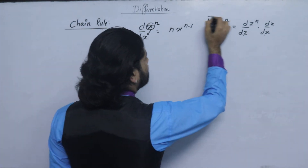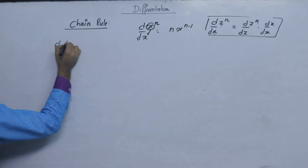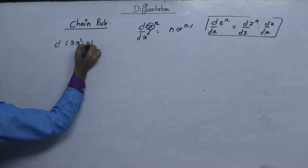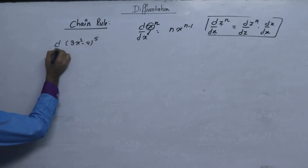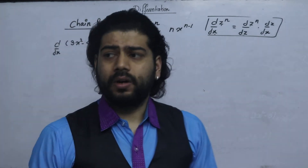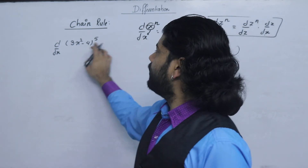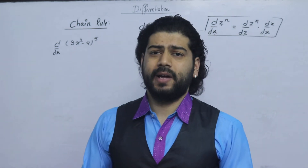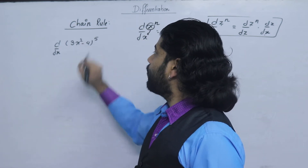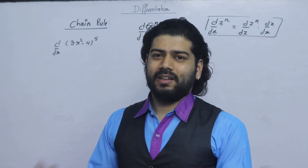Now, what is the chain rule? For example, consider 3x squared minus 4, to the power 5, derivative. If the square is a cube, we can open the formula using (a minus b) squared. So, 3x squared minus 4 to the power 5 — the power 5 involves a binomial expansion.